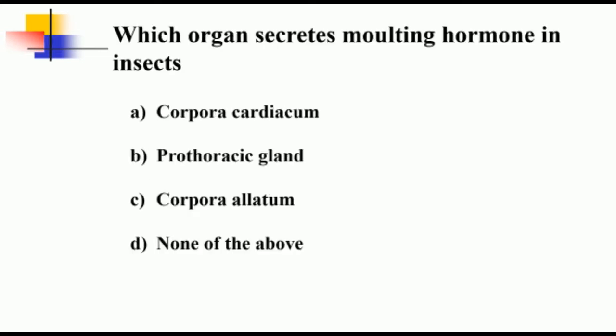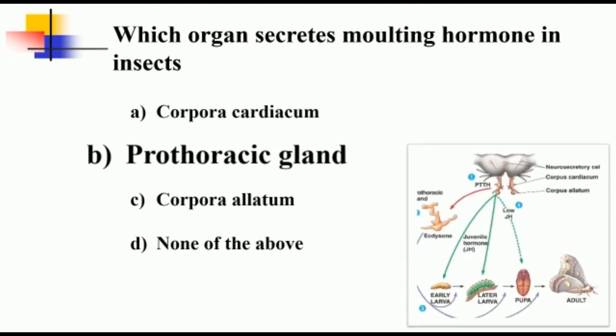Which organ secretes molting hormone in insects? The prothoracic gland. The neurosecretory cells of the brain secrete PTTH hormone, that is prothoracicotropic hormone, which stimulates the prothoracic gland to secrete ecdysone, nothing but the molting hormone. Below the neurosecretory cells, two glands are present: one is corpus allatum and corpus cardiacum. The function of corpus allatum is to secrete juvenile hormone, and corpus cardiacum secretes eclosion hormone.